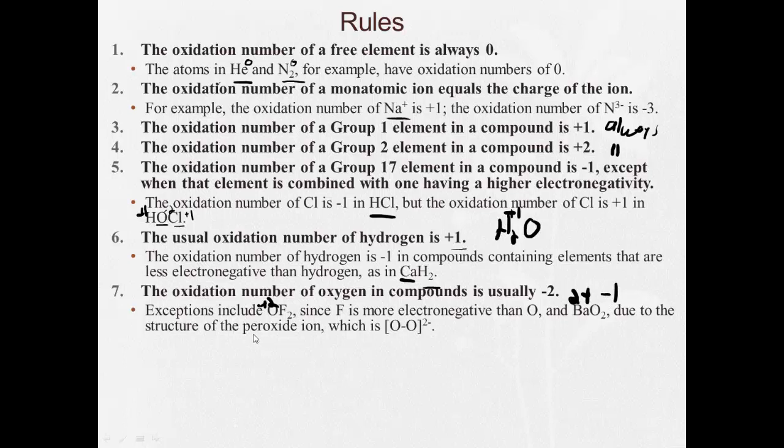And that's because of the peroxide ion, which is O2 2-, which means each oxygen is a minus one. It's a very odd exception. You're not really going to see it in redox questions usually.